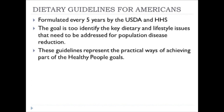One of the ways the government attempts to achieve a modification in disease rates is to formulate the Dietary Guidelines for Americans. They are formulated every five years by the USDA and the Department of Health and Human Services, with the goal of identifying key dietary and lifestyle issues that need to be addressed for population-level disease reduction. These guidelines represent a practical, hands-on way of achieving part of the Healthy People goals.